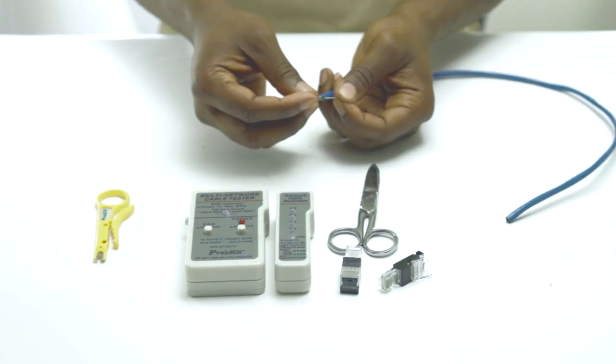Peeling back the jacket removes the inner pairs. Taking my technician scissors I can snip off the pull string.